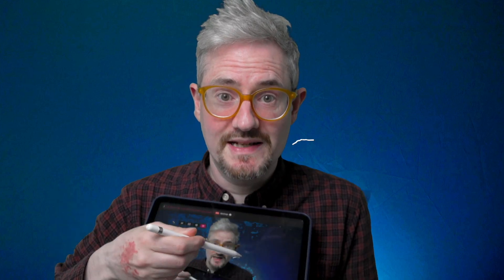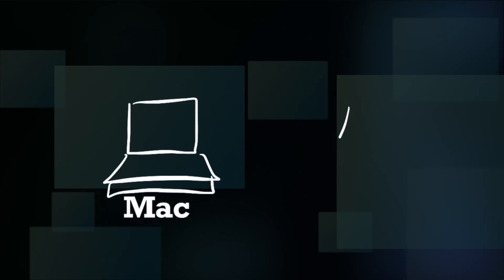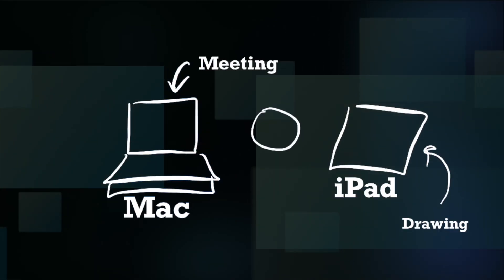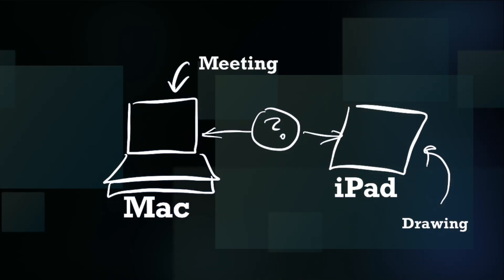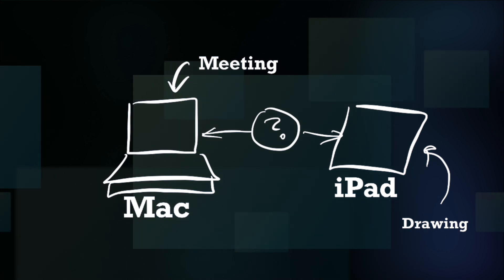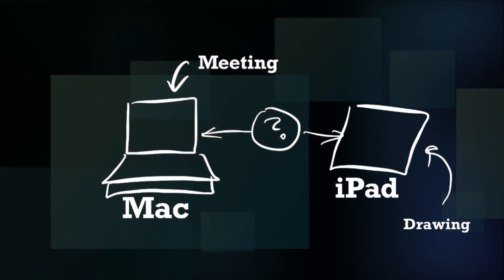With Video Pencil you can be in a meeting on your Mac, grab your iPad, and see exactly where you're drawing. You can see yourself. In order for that to work, we need a way to connect the Mac to the iPad — something in between that meeting and your iPad that makes it all work.